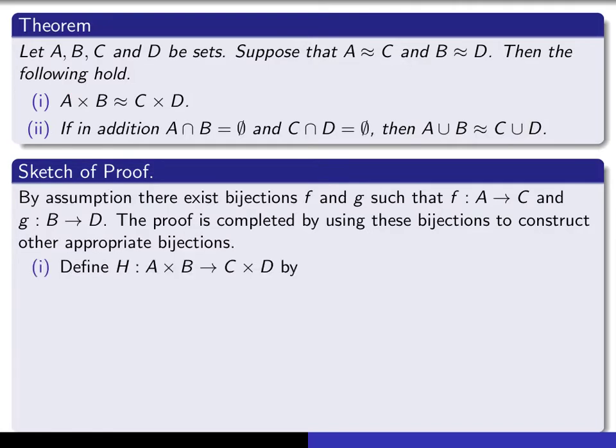So here I've started you out in the right direction. Let's define H from A cross B to C cross D. I'm trying to prove this one. And so the question is, what do you think would work? We know that we can map A to C bijectively via F. We can map B to D bijectively via G. How could we somehow use those to create a function that maps a Cartesian product to a Cartesian product? You start with an element XY in here. Where do you think you should map it using this F and this G?